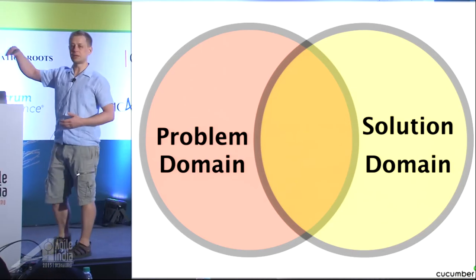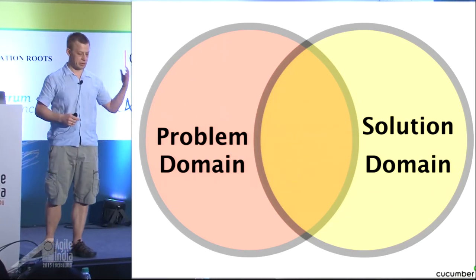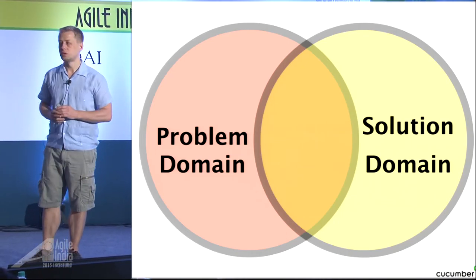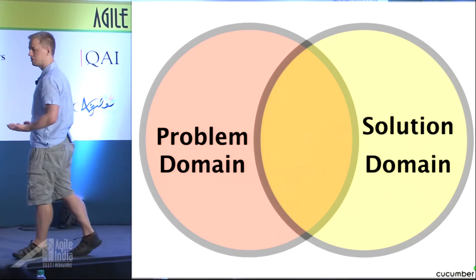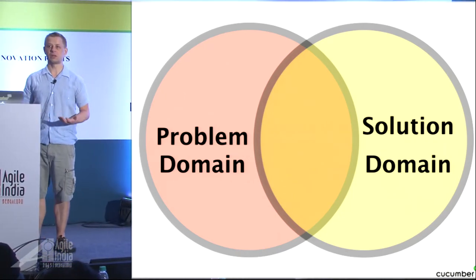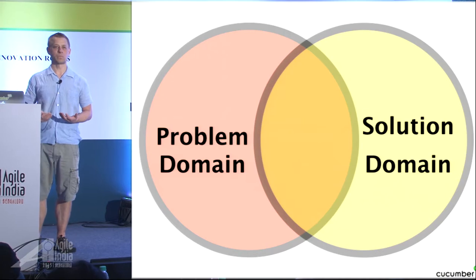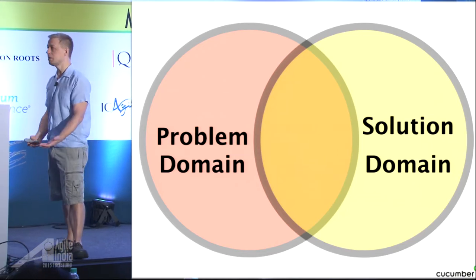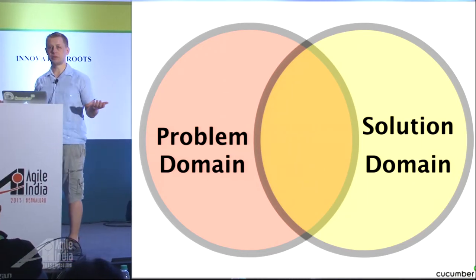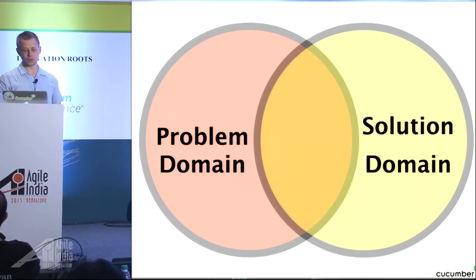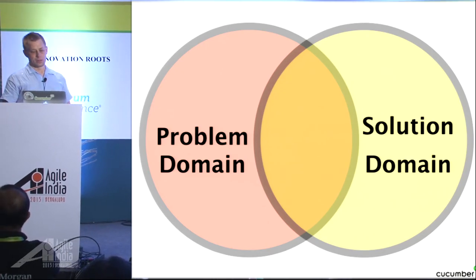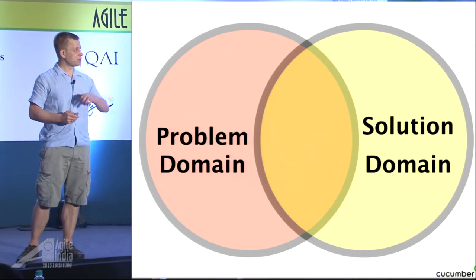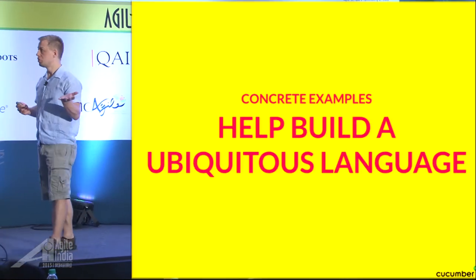Everybody who's a programmer needs to understand this. In my previous job I was working in finance — options and futures — and I didn't have a clue. I had to learn about the whole financial domain before I could even start writing software in it. Software is just creating a model of the real world, and how can you create good software unless you understand the problem domain? If you model the problem well enough, the solution will take care of itself.